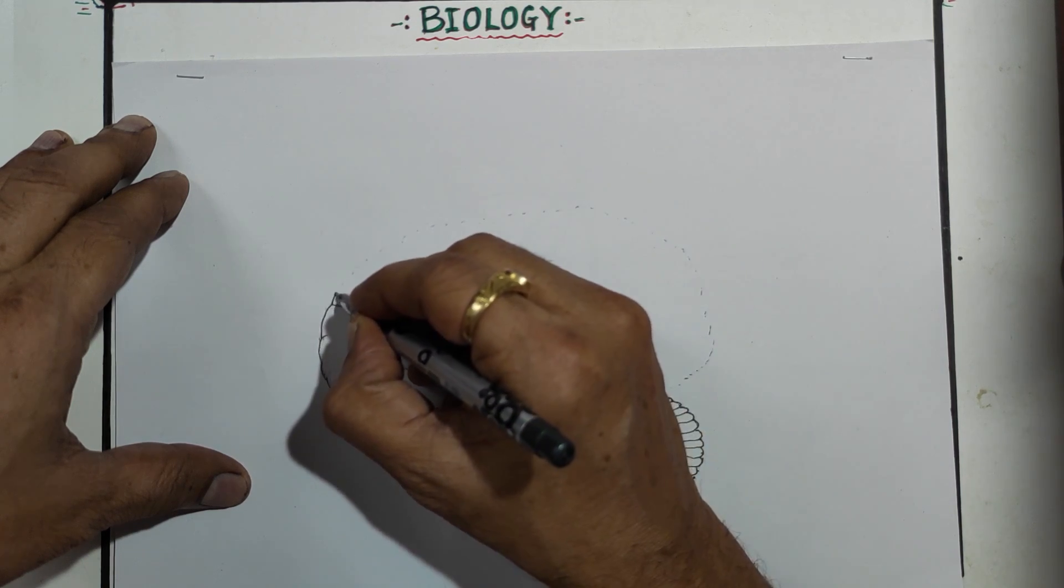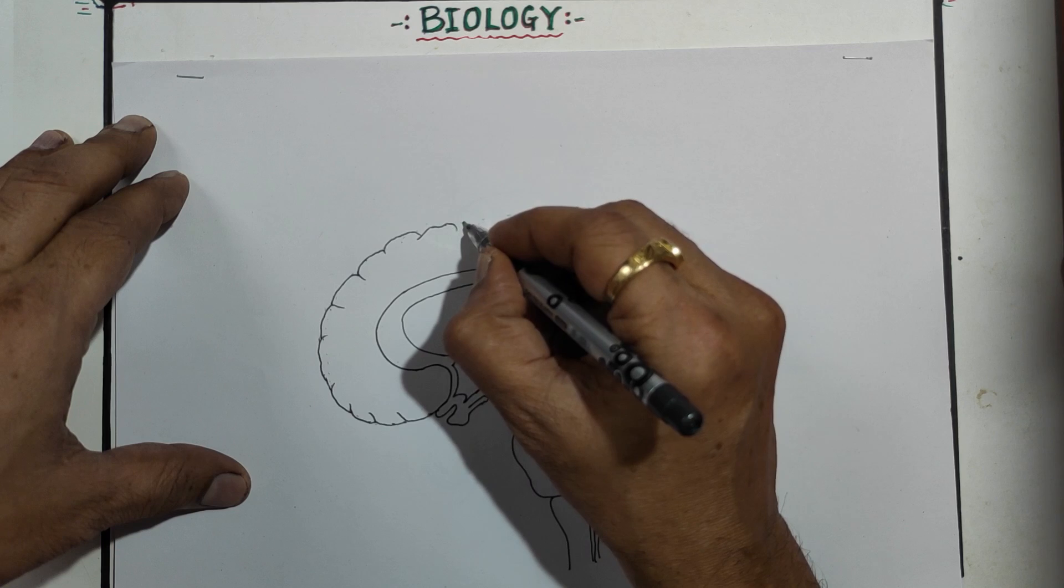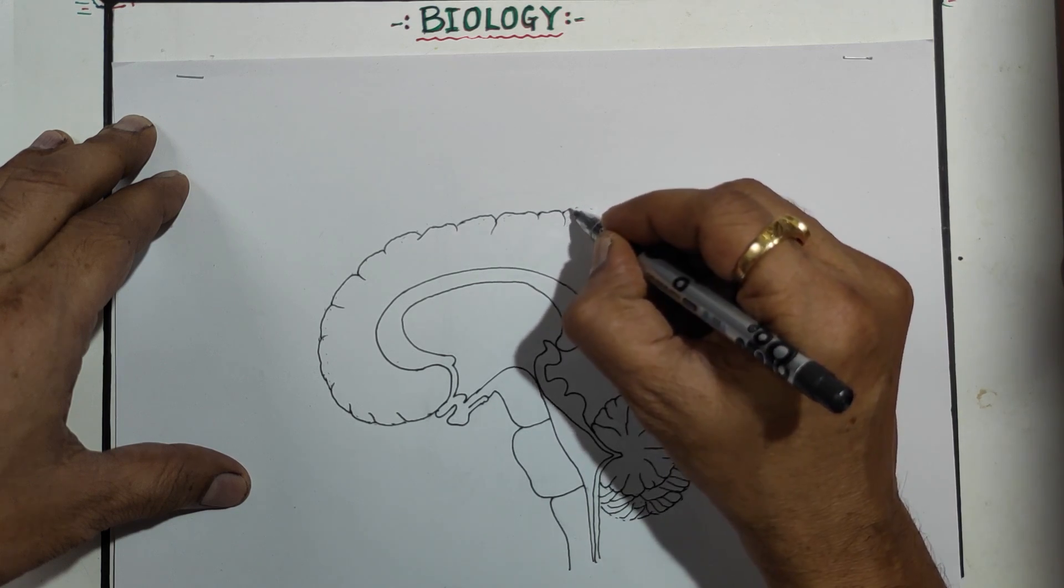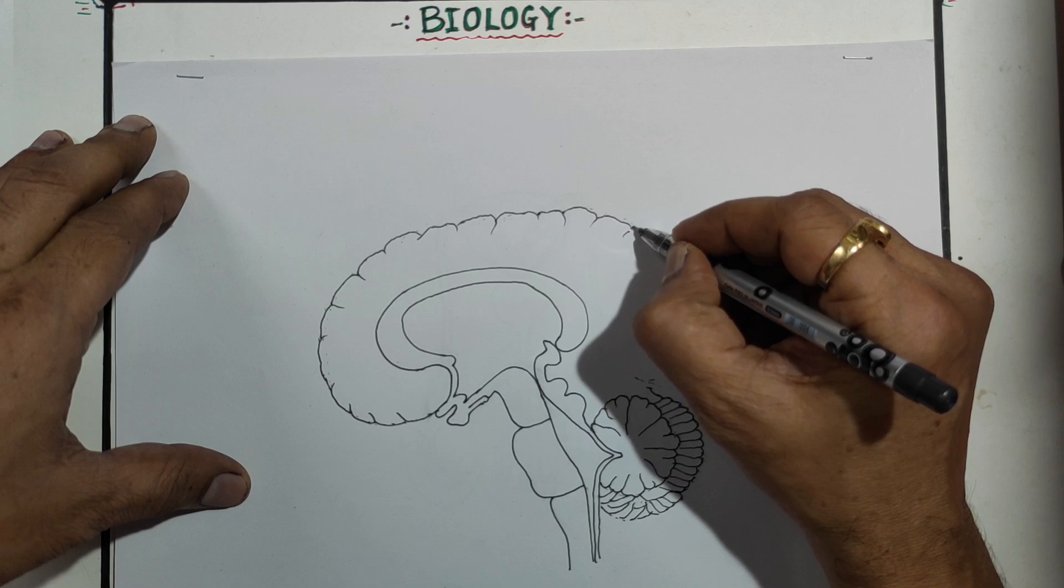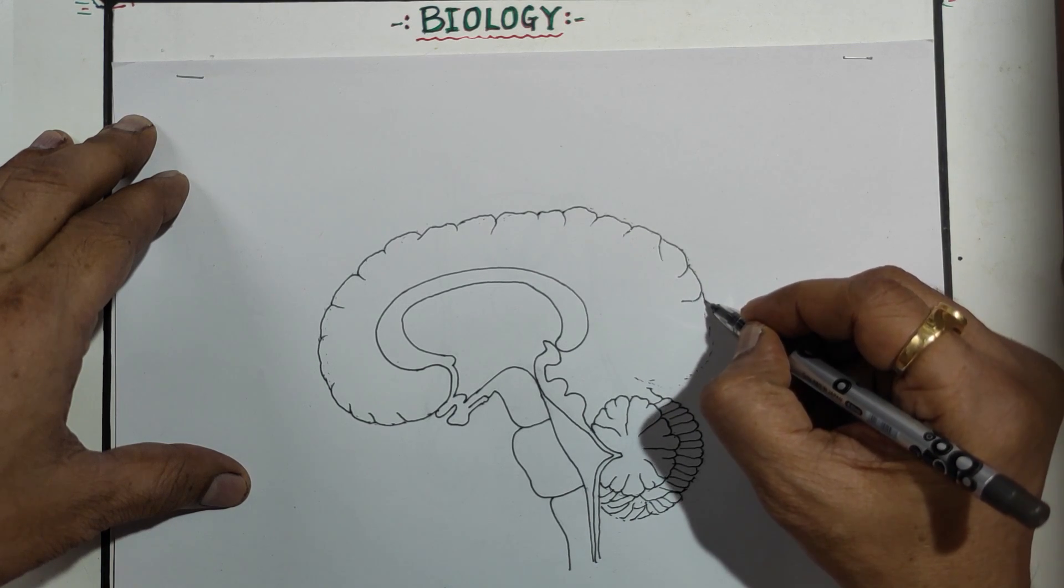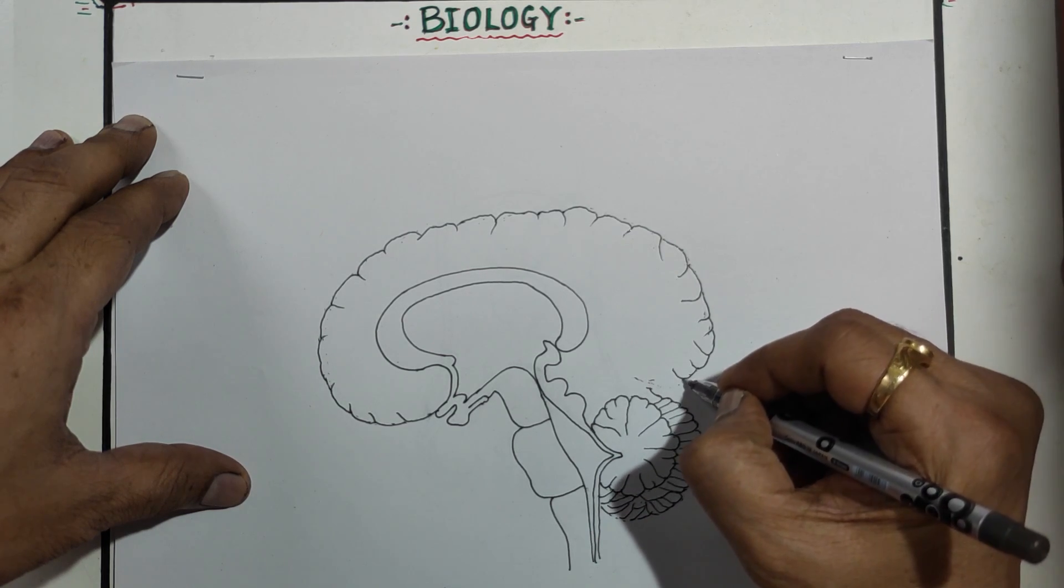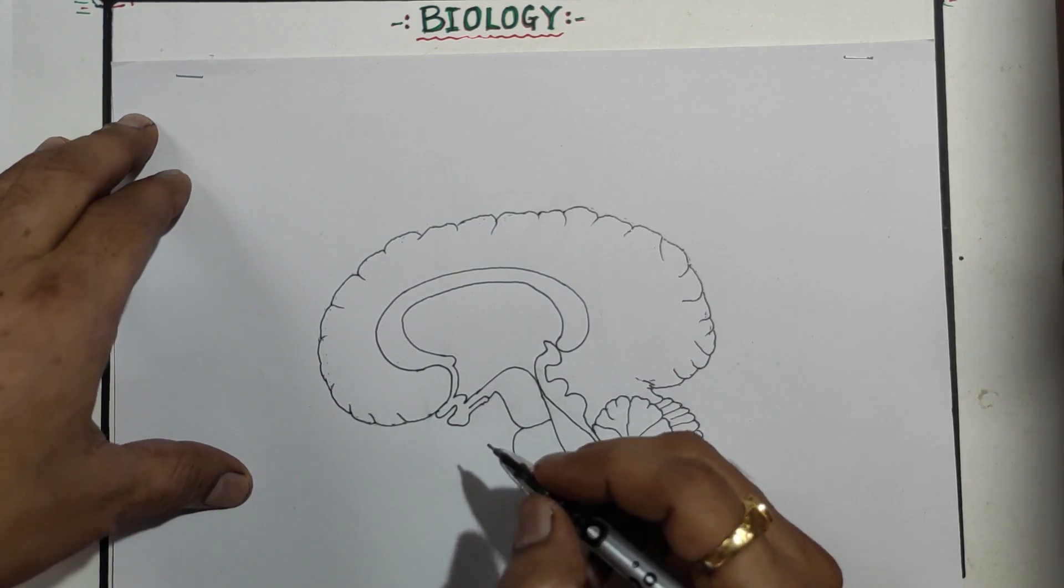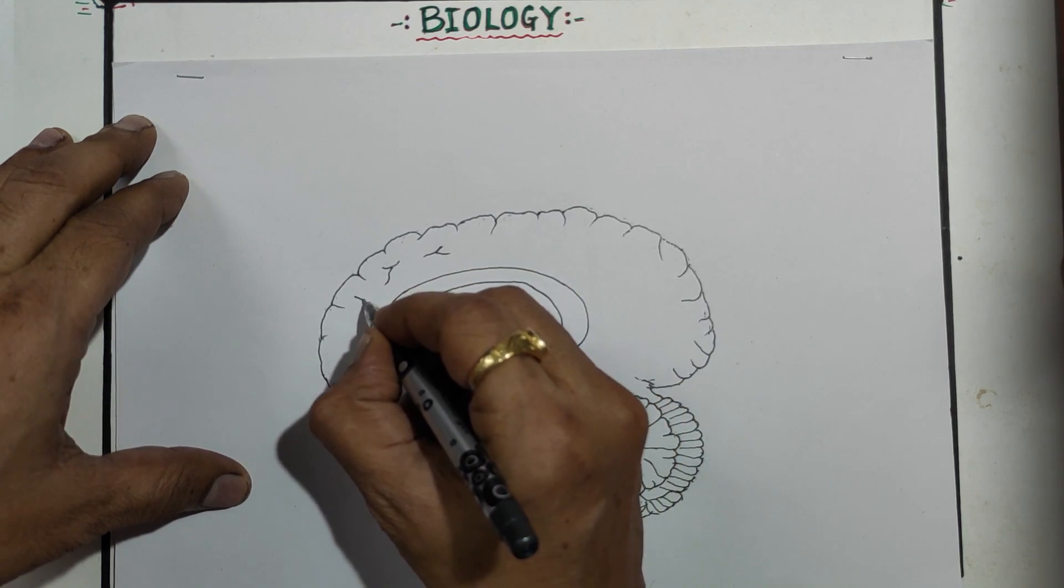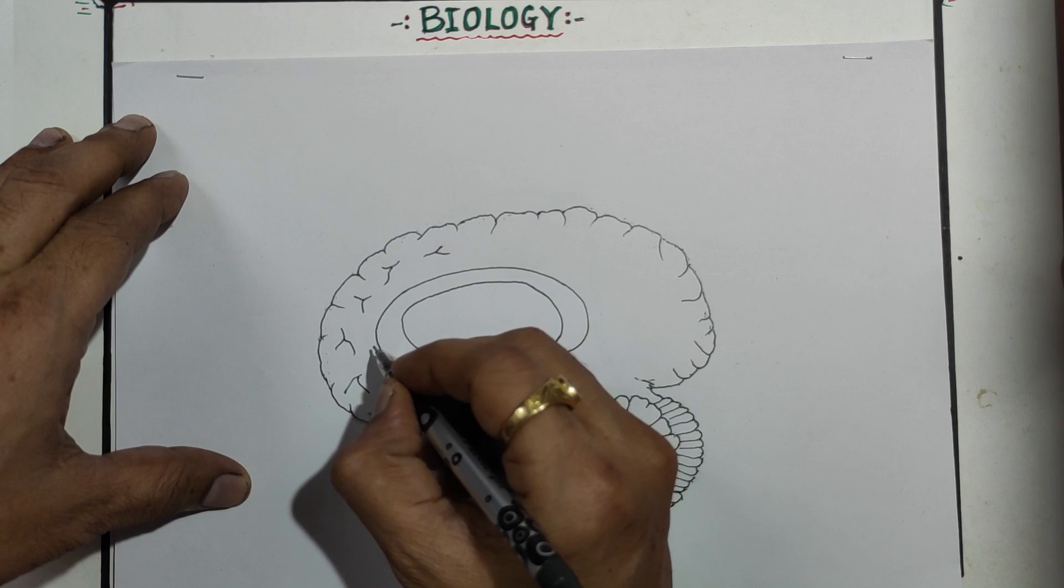Remember, always draw diagram with the pencil. As I have the practice, that's why directly I am doing with the pen. And because of the pen it is more visible for you. So this is a cerebrum. Here we will touch. Now inner to this, carefully make the line somewhat like that first. And this lines afterward will join in a different way.